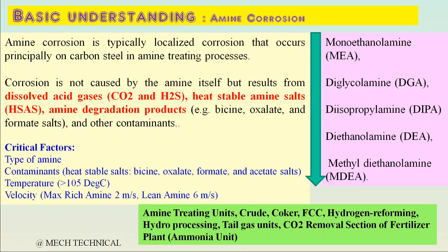The units where Amine corrosion occurs: wherever Amine is used to absorb acid gases, all those units may have Amine corrosion. These include Amine treating units (ATUs) in refineries — crude, coker, FCC, hydrogen reforming, hydro processing, and tail gas units. In fertilizer plants, there is the CO2 removal section in the ammonia plant, where MDEA is also used, and Amine corrosion can occur there as well.